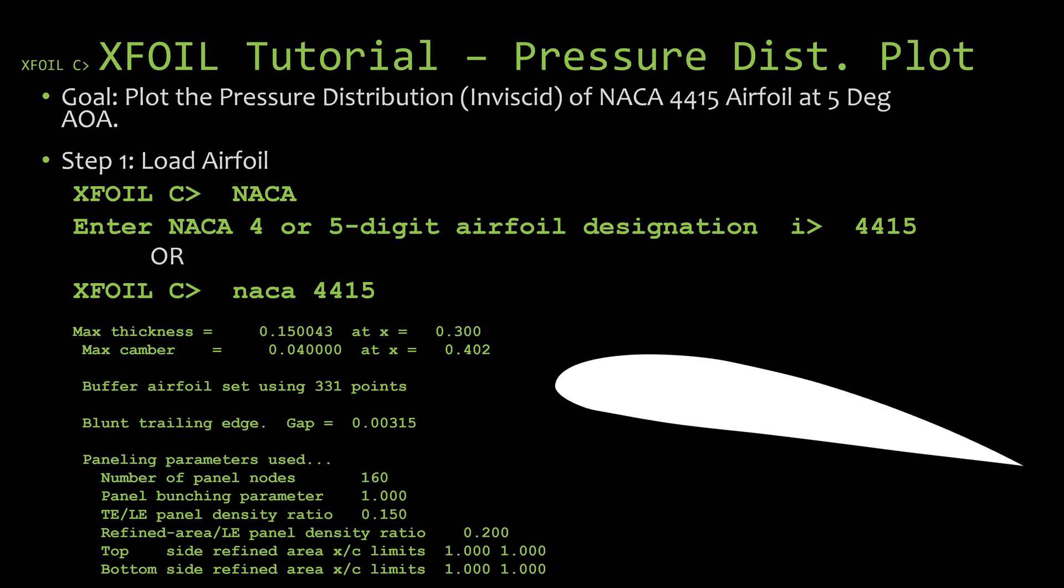We'll have another video later that would explain the four-digit and five-digit numbers, what they mean. But you can kind of see it right here, right? The four, the two fours, you see there's a max camber 0.04 at 0.4 and then you see the 15 right there at the max thickness at 0.15. We got some of the paneling parameters used and we'll have a video in the future all about adjusting these parameters and what they do and what they mean.